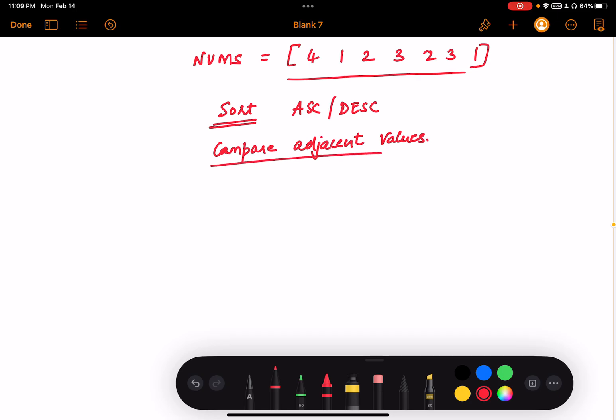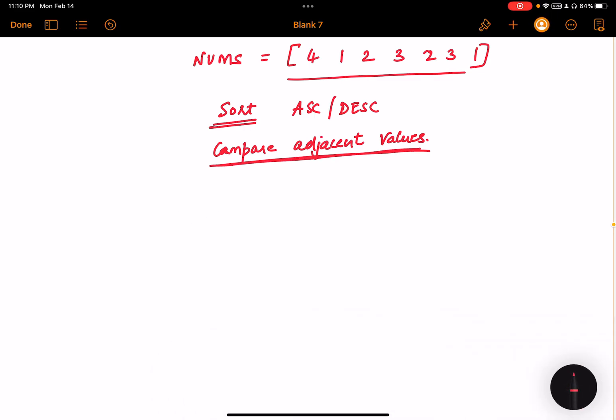And then compare adjacent values. The values need to be equal and our iteration should increment by the space of two.